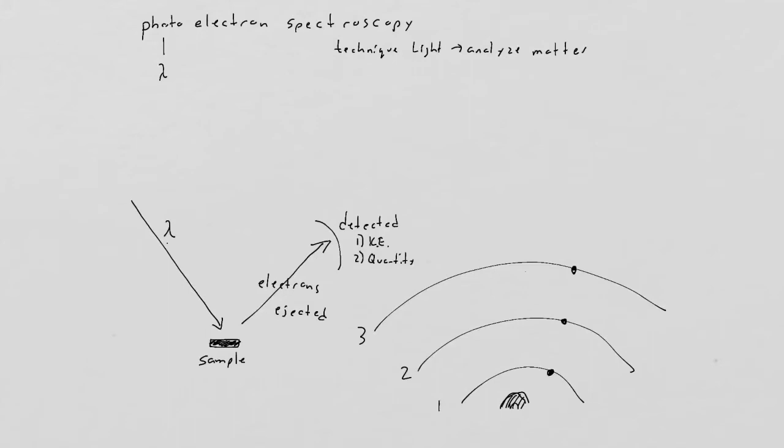So basically, we expose the sample to high energy radiation like UV. Electrons then get ejected and then they get detected. Why is this useful? Well, it's useful for two reasons. Number one, it's going to allow us to understand atomic structure. Essentially, this is the proof of the electron configurations to some degree.